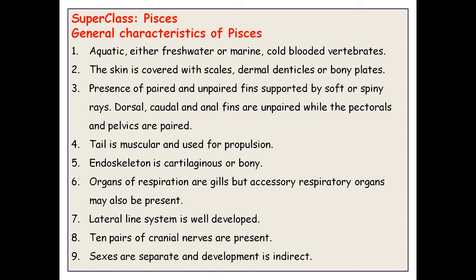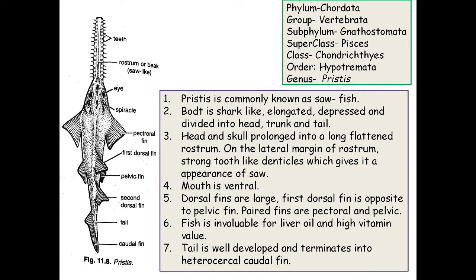The lateral line system is very well developed in Pisces on both lateral sides of the body. Cranial nerves are 10 pairs in fishes. Sexes are separate and development is indirect. These are the general characteristics of Superclass Pisces.